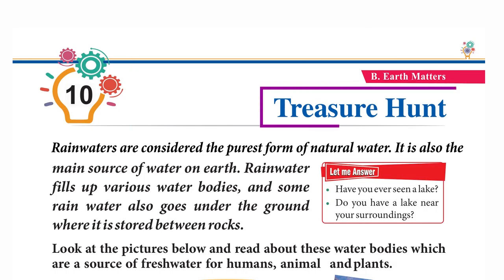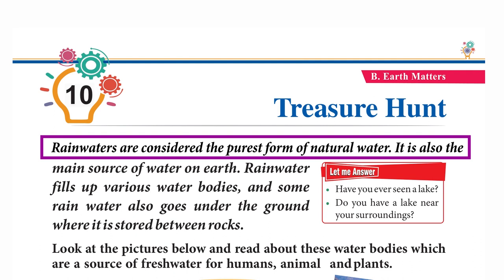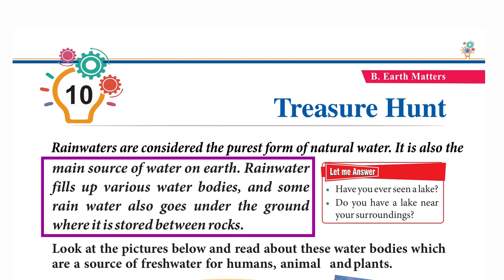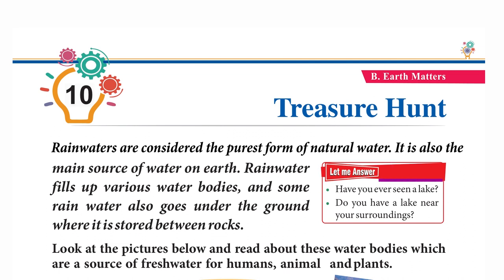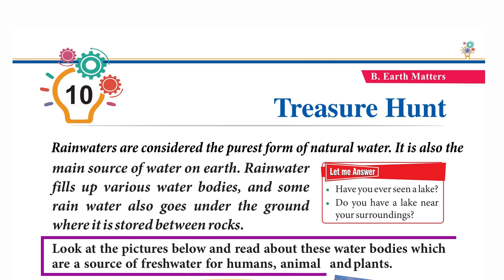Chapter 10: Treasure Hunt. Rainwater is considered the purest form of natural water and is also the main source of water on earth. Rainwater fills up various water bodies, and some rainwater also goes underground where it is stored between rocks. Have you ever seen a lake? Do you have a lake near your surroundings? Look at the pictures and read about these water bodies which are sources of fresh water.